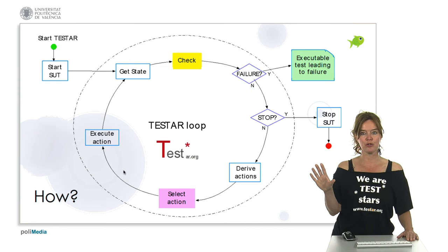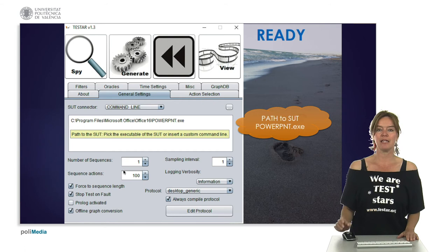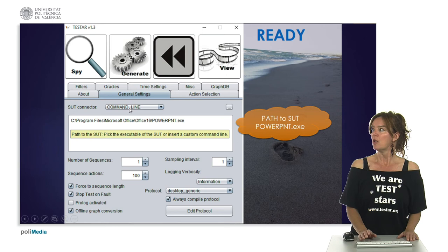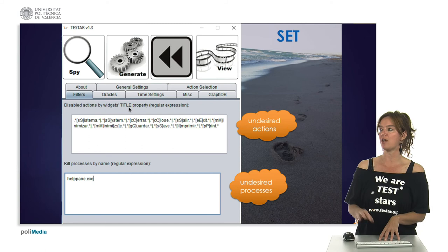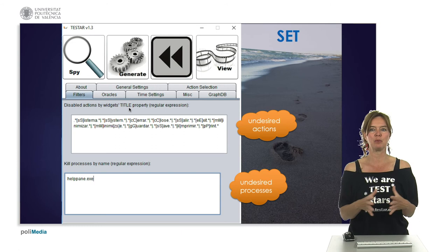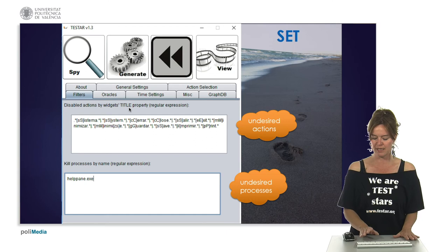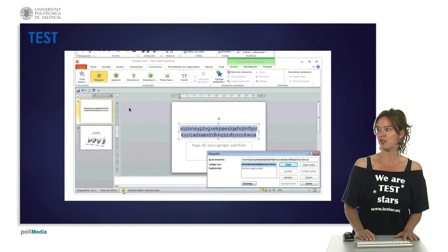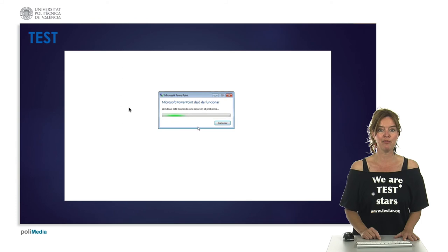This is basically how the tool works. In the Test* dialog you set the path to the system under test — for example, PowerPoint. You can specify certain actions you do not want to execute, such as close, exit, minimize, or print, since those just stop or minimize the system. Then you simply start testing. Here we see an example where PowerPoint is tested automatically with random action selection — it clicks through all actions, and in the end a crash is found.